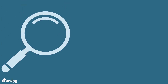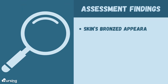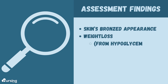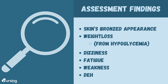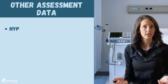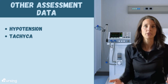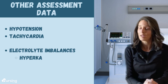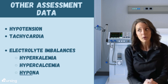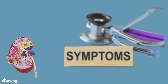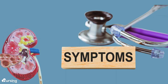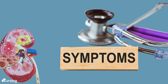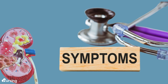Some classic assessment findings include a bronzed skin appearance. Patients may also experience weight loss due to hypoglycemia, as well as dizziness, fatigue, weakness, and dehydration. Other assessment data will show hypotension and tachycardia, as well as electrolyte imbalances like hyperkalemia, hypercalcemia, and hyponatremia. Symptoms can be subtle or occur over several months, but during times of stress, illness, or injury, the symptoms can be much worse.